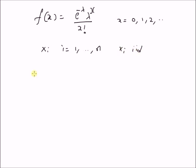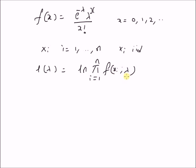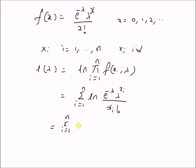The log-likelihood function L of lambda is given by the logarithm of the product i equal to 1 to n of f of x_i with parameter lambda. This equals the summation i equal to 1 to n of the logarithm of e power minus lambda times lambda power x_i divided by x_i factorial. Since there are three terms, we can split this sum as: summation i equal to 1 to n of log(e power minus lambda), plus summation i equal to 1 to n of x_i times log(lambda), minus summation i equal to 1 to n of log(x_i factorial).